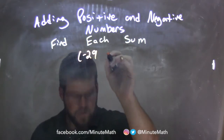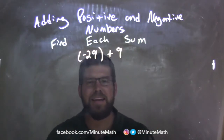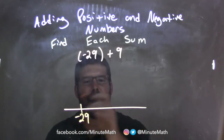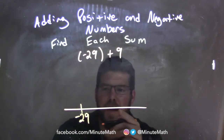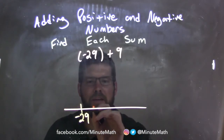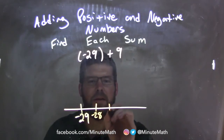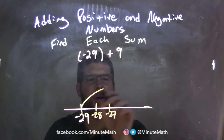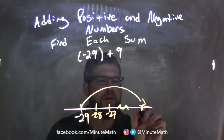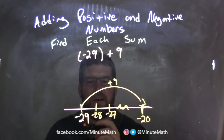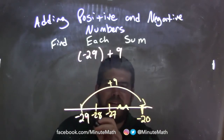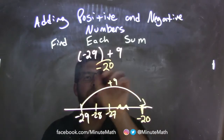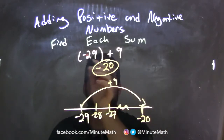Negative 29 plus 9. I find this easy to see with a number line. So if I have negative 29 here and I want to add 9 units in the positive direction, I move to the right: negative 28, negative 27. If I add 9 more units to negative 29, that jumps all the way to negative 20. Negative 29 plus 9 gives me negative 20 as my final answer — still negative, but larger than the original negative 29.